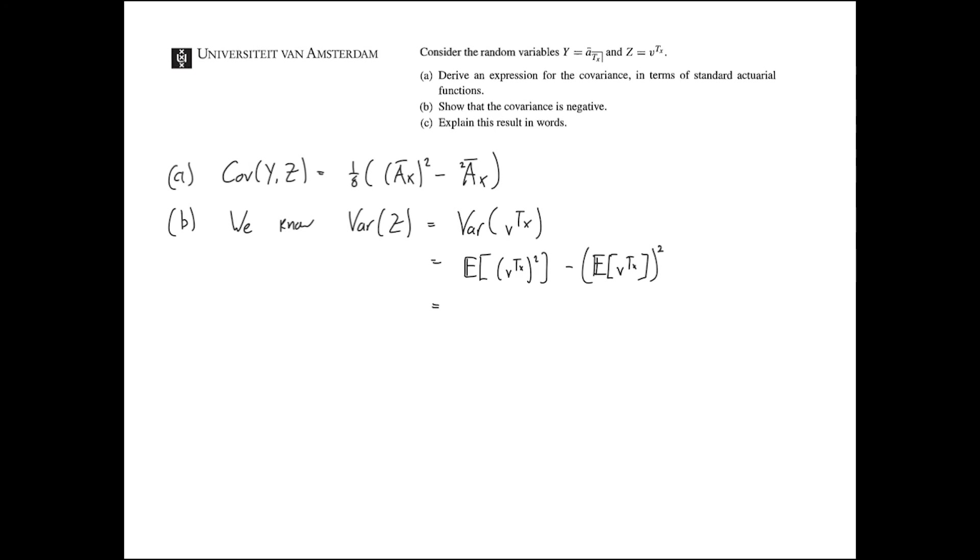So Vt x squared minus the first moment, the first moment squared. And, but this is simply, well, the second moment is 2 A x bar, and the first moment squared is A x bar squared. Moreover, we know that the variance of this random variable, variance is always positive. A negative variance does not make sense. So if this is true, this is true, then we know that,